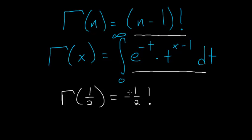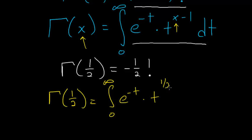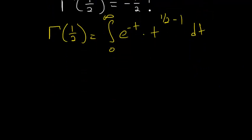So to do this we'll just plug one-half in here for x and evaluate. So gamma of one-half is equal to the integral from zero to infinity of e to the minus t times t to the one-half minus one dt. Now we just have to simplify.